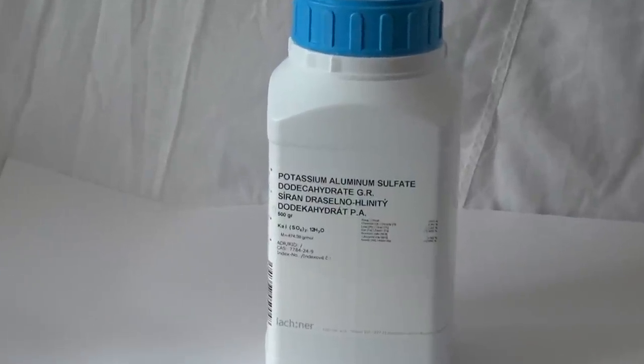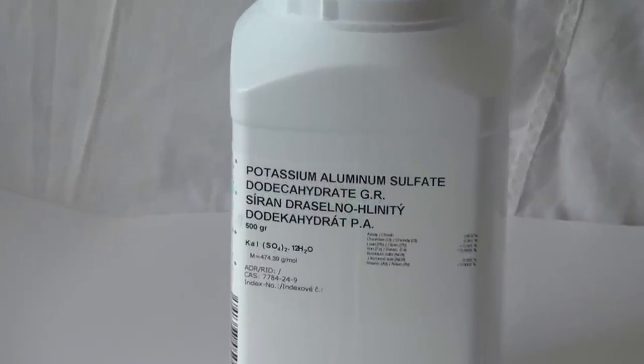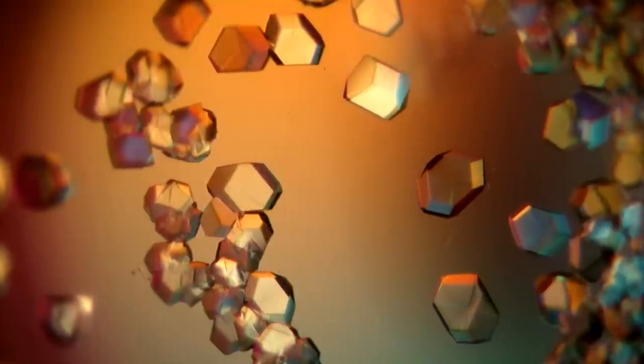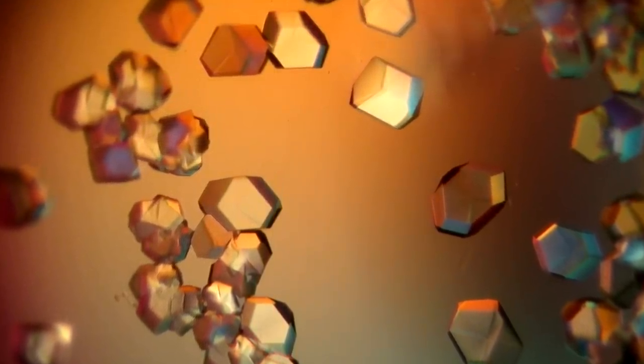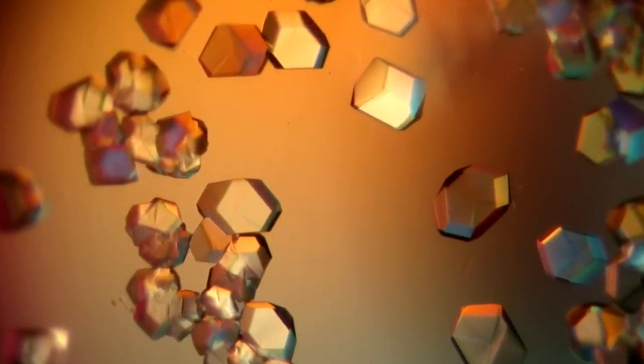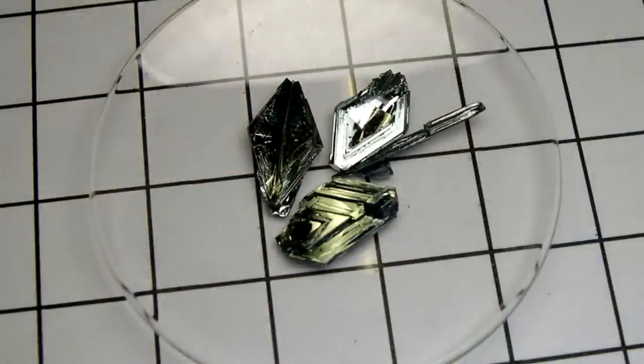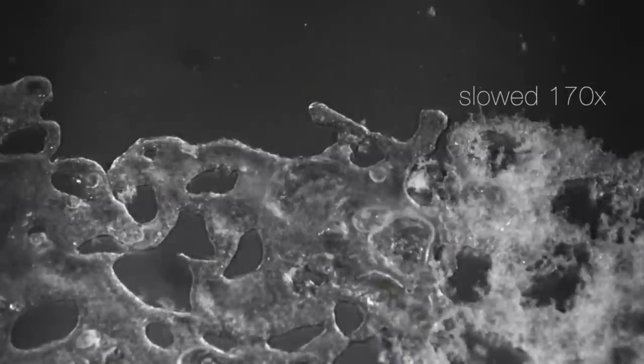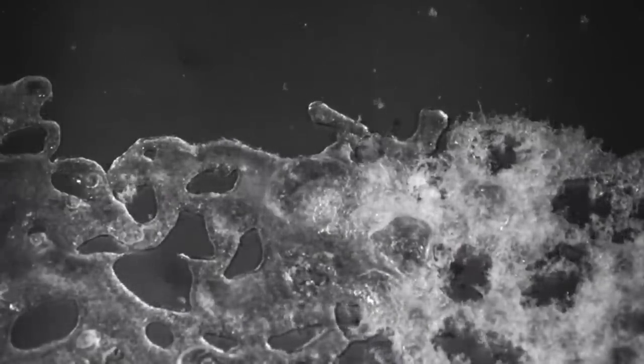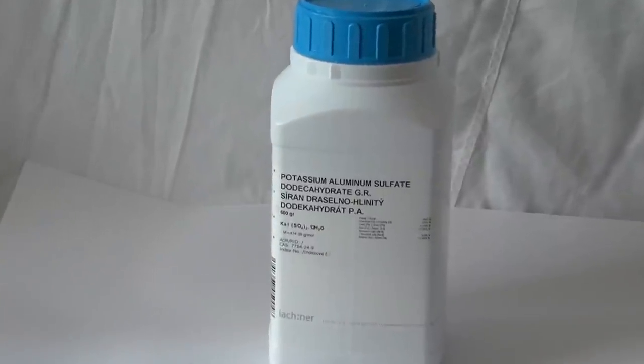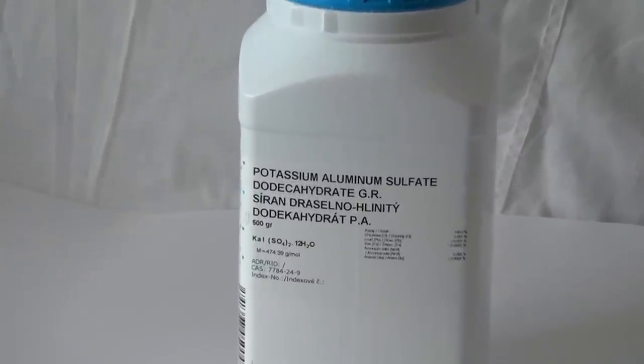First, we need to choose the material of which we will grow the crystal. Essentially, practically any substance is suitable for crystal growth. For example, protein crystals, crystals of iodine, metals crystals. Even air can be turned into a crystal at extremely low temperature. For normal conditions, the best suited are inorganic salts.